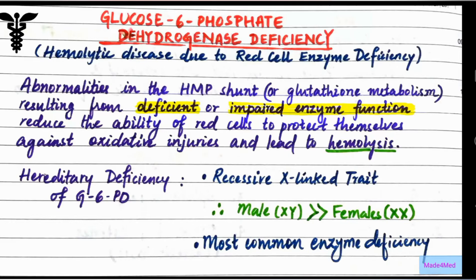G6PD or glucose-6-phosphate dehydrogenase deficiency is a hemolytic disease due to red cell enzyme deficiency. Due to the enzyme deficiency there is destruction of RBCs. There is an abnormality in the HMP shunt or hexose monophosphate shunt, which is used for the metabolism of glutathione. It results from either deficient or impaired enzyme function, which reduces the ability of red cells to protect themselves against oxidative injuries, thus leading to hemolysis.